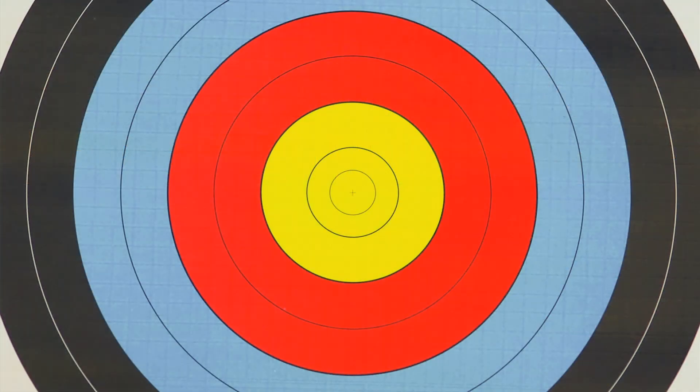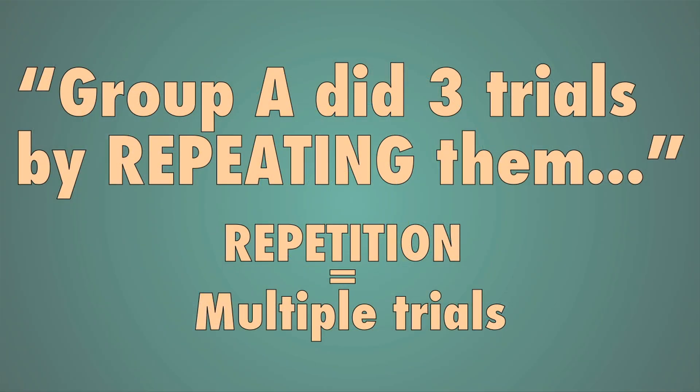Group A did three trials by repeating them. Repeating refers to multiple trials, thus repetition would be the correct answer.